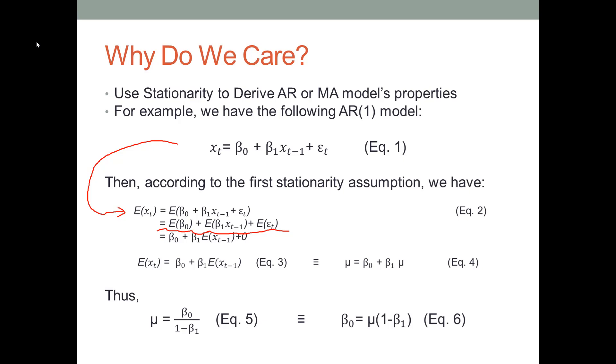We can further transform equation 3 to equation 4, as you can see on this slide. After some algebra operation, we can get equation 5 and equation 6. Notice that we have three bars between equation 3 and equation 4, and also between equation 5 and equation 6. The three bars are a mathematical symbol to show that two equations are equivalent.